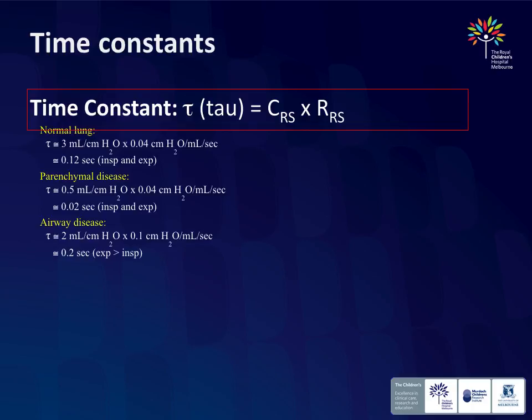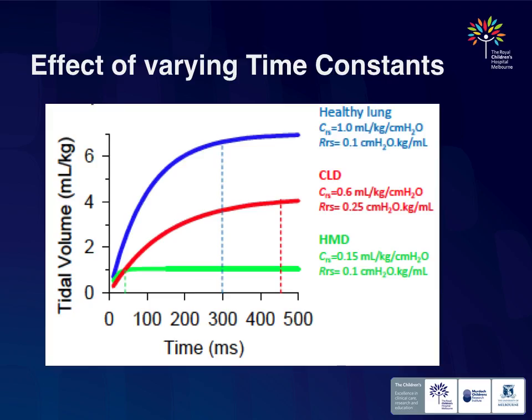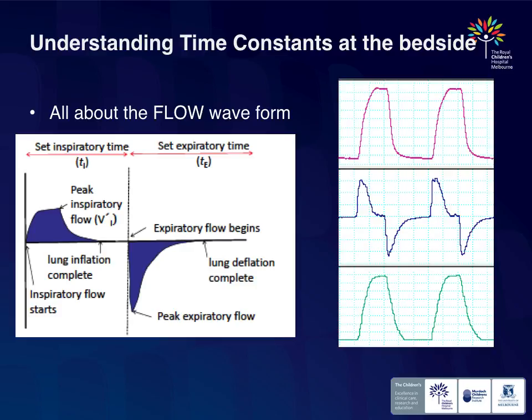All of that maths is actually not needed because modern ventilators give you the information graphically and allow you to adjust to the right time constant. We get the flow wave, which is the most important waveform on a ventilator because it tells you how gas is going in over time — flow is a measure of volume and time.